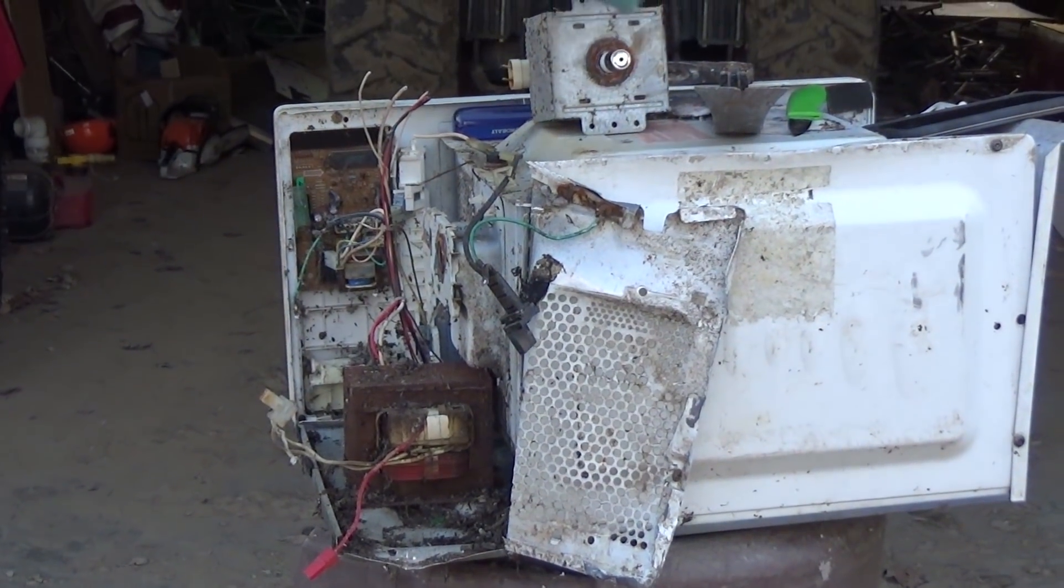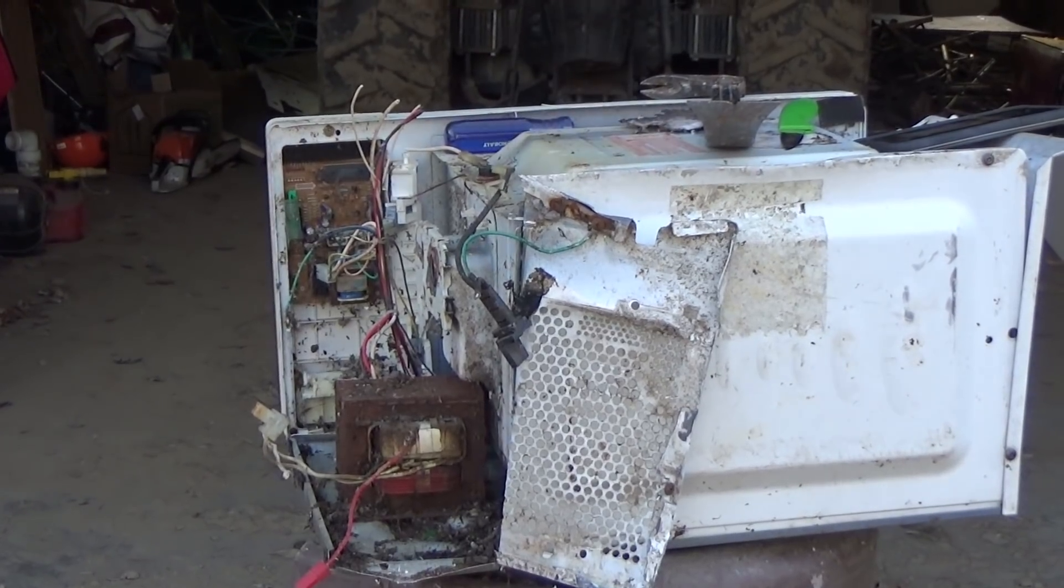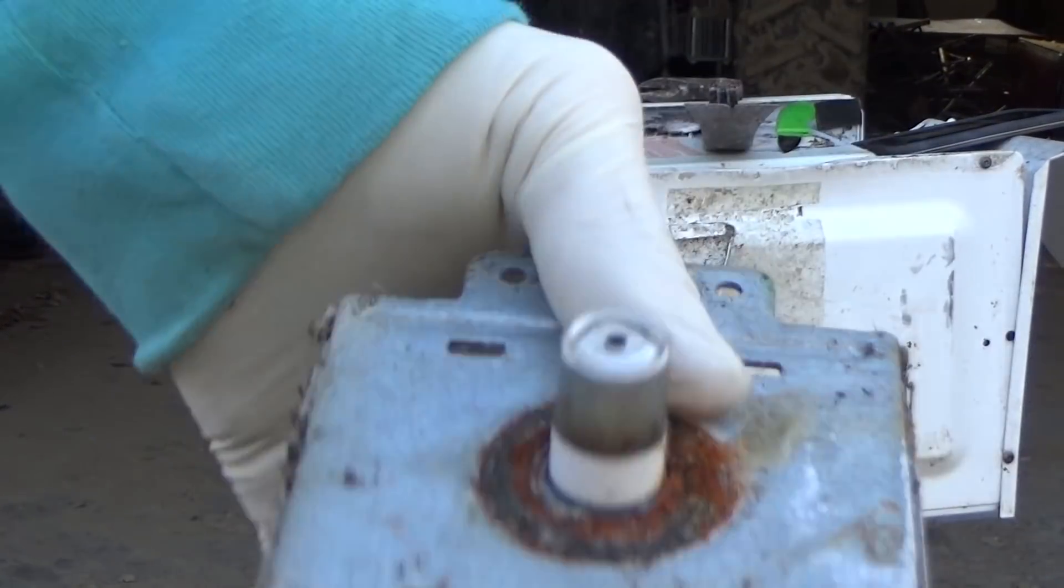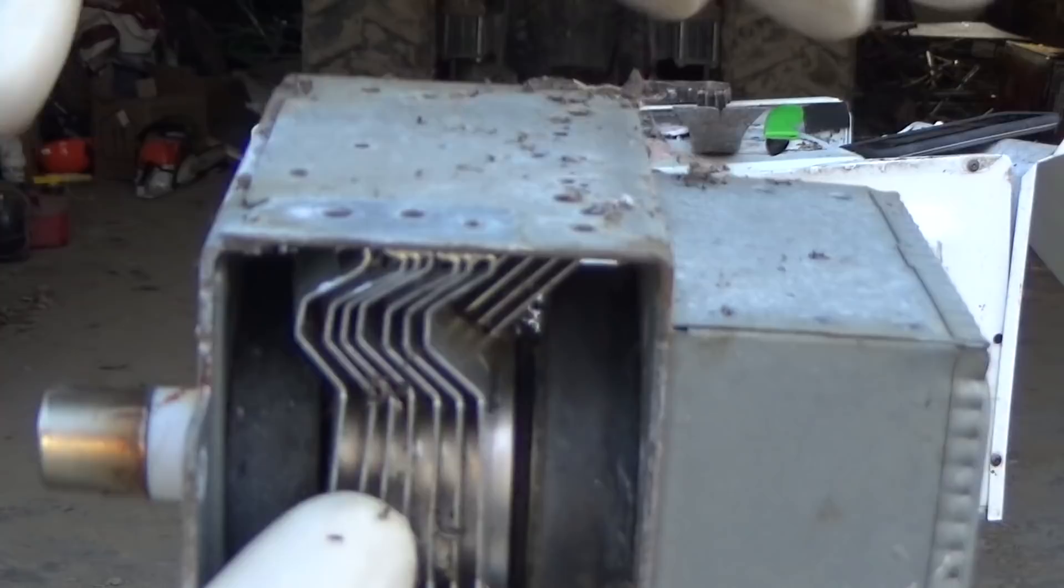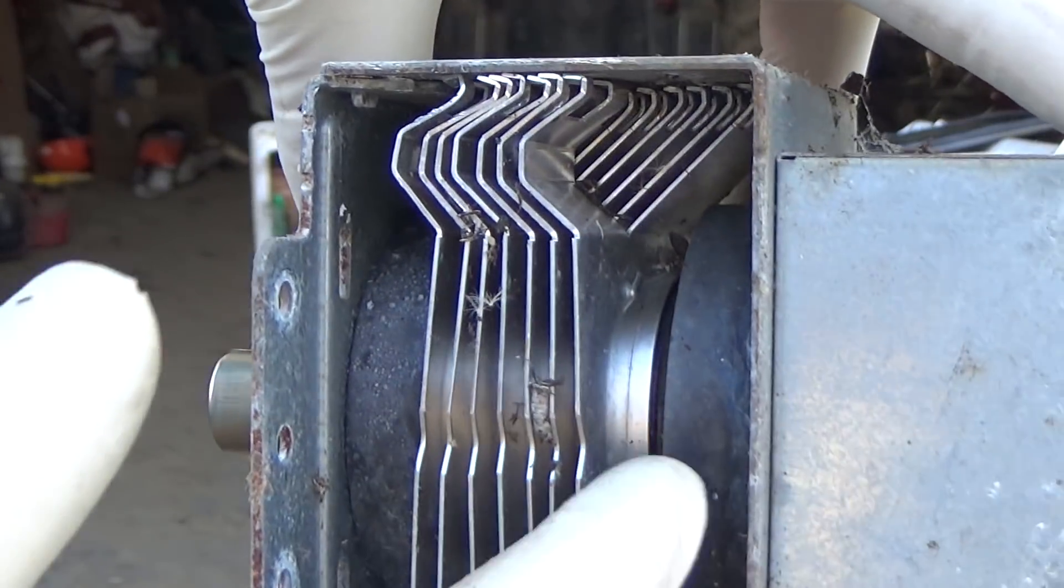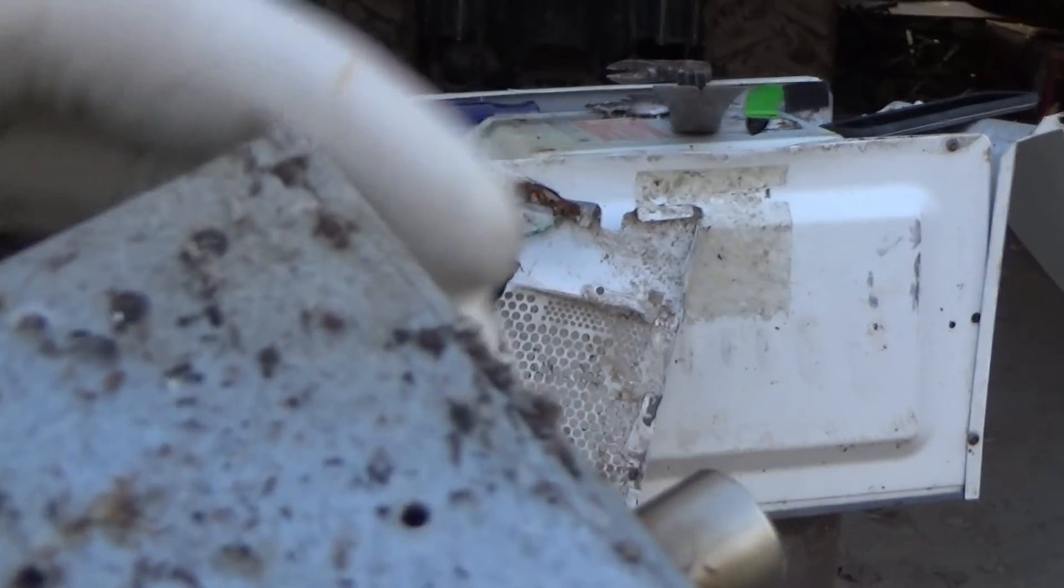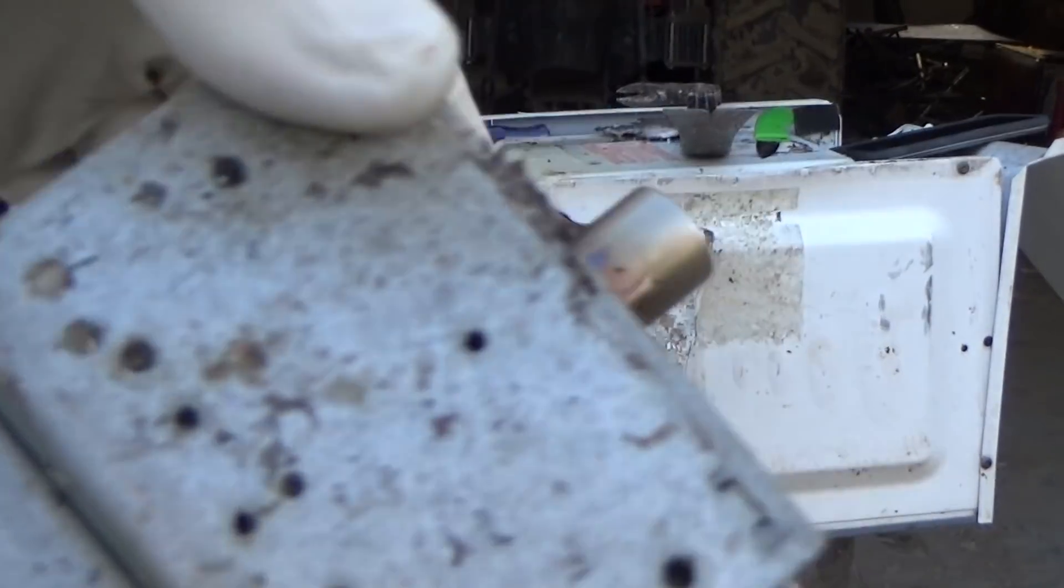So I got the magnetron out right here. This is it. The thorium should be in that cylinder in there. I'm not sure how I'm going to get it out though. Cause this thing, there's no screws holding it together. It's all just metal.